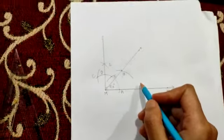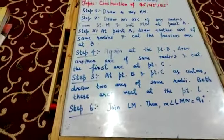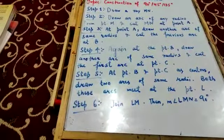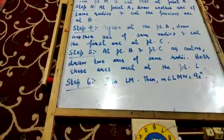So yeh is ki construction hai. Up to step 6 jaisa ki ham nae 90 degree mein steps likhet hai. Up to step 6 berabar vahi hai. Then we have to add one or two steps more. Yehaan par mein add karthi ho.